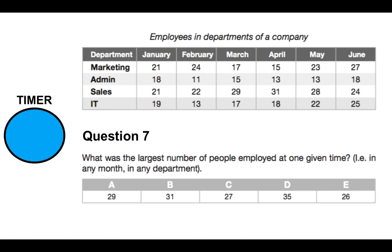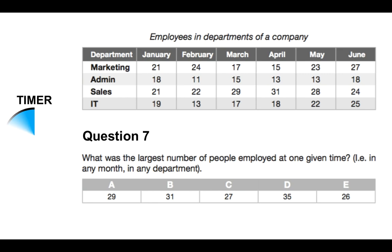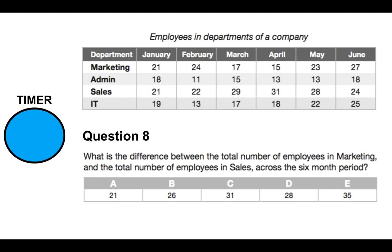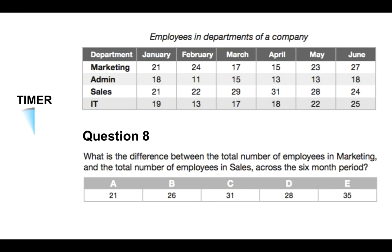Question 7: what was the largest number of people employed at any one given time — in any month or any department? Is it A 29, B 31, C 27, D 35, or E 26? Question 8: what was the difference between the total number of employees in marketing and the total number of employees in sales across the six-month period? Is it A 21, B 26, C 31, D 28, or E 35? Please put your answers to questions 7 and 8 in the comments section below.